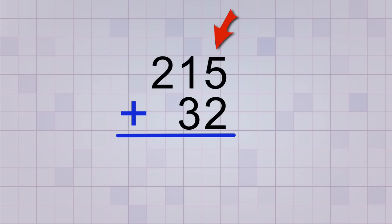And in the ones place, we have 5 plus 2, which equals 7. So we put a 7 in the ones place of our answer, which is just below the line. Now we can move left to the next number place column, which is the tens place. The digits there are a 1 plus a 3, and that gives us a 4 in the tens place of our answer.